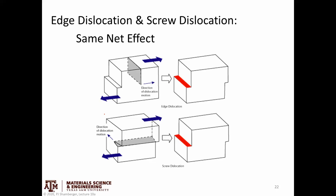This picture summarizes it: we reached the same final point two ways. One was by an edge dislocation moving in one direction — the edge dislocation is the line at the bottom of the half plane of atoms.